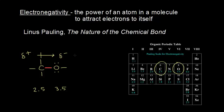That's a polarized situation. You have a little bit of negative charge on one side, a little bit of positive charge on the other side. So it's still a covalent bond, but it's a polarized covalent bond due to the differences in electronegativities between those two atoms.